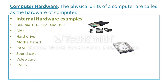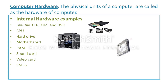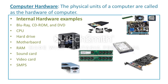Computer hardware is generally classified into hardware and software. Software means it is a program or set of programs. Computer hardware means the physical units of the computer — those which can be seen with the open eyes. Examples of internal hardware include Blu-ray, CD-ROM, DVD, CPU, hard drive, motherboard, RAM, sound card, video card, and SMPS.